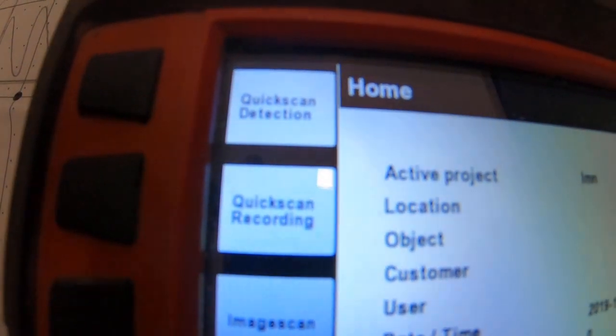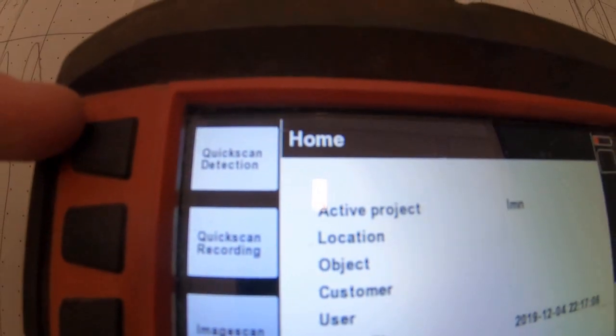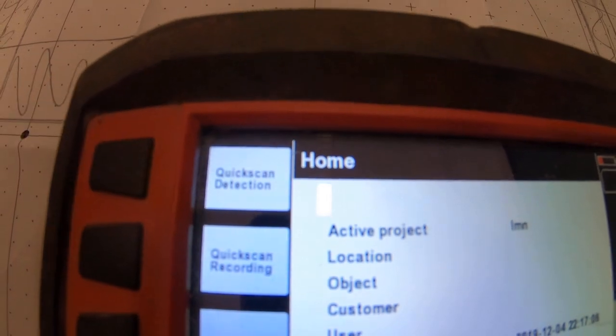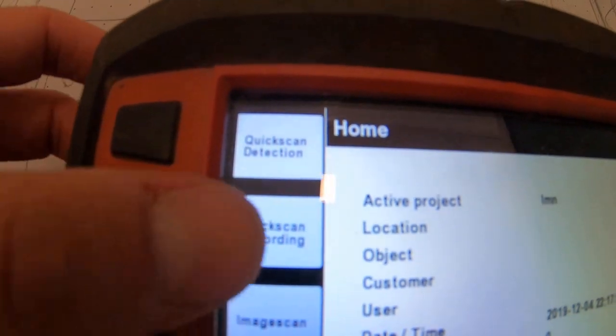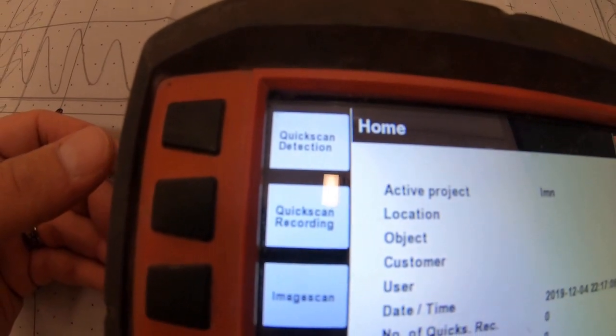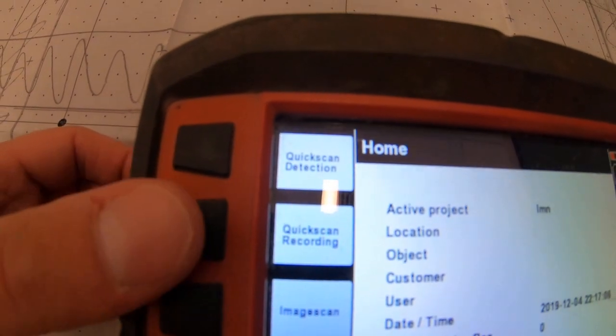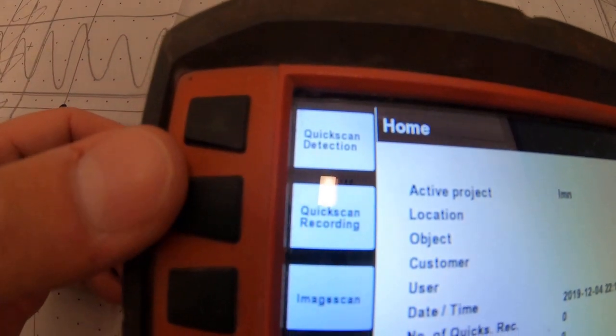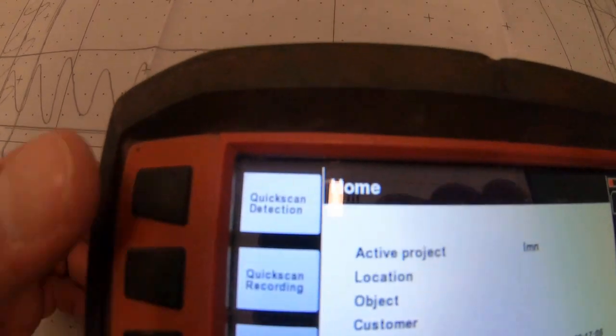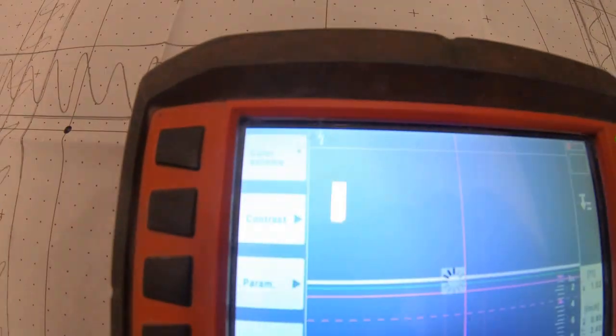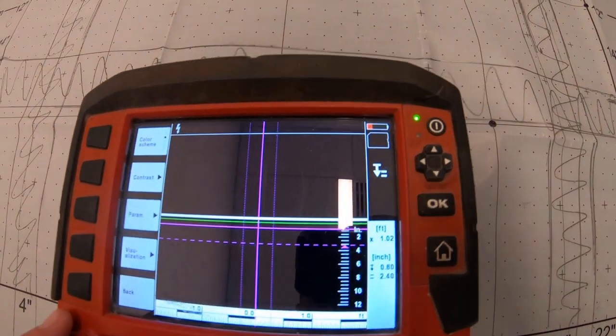Just know that when you do quick scan, you're not going to be able to save any information. It's going to be just live, and you looking at it, and you marking it. Quick scan recording is where you actually save the information, and it actually records it on the SD card or on the unit itself. And then image scan is obviously saved as well. So I'm going to jump over here to quick scan detection, and you're going to see this screen pop up.